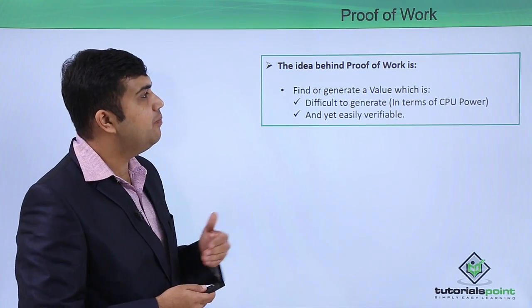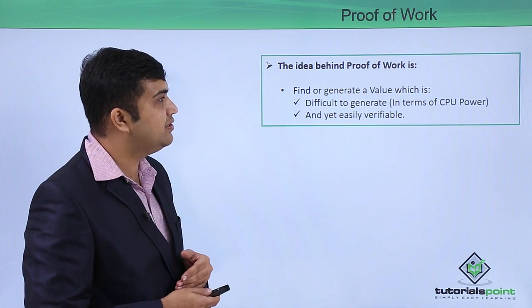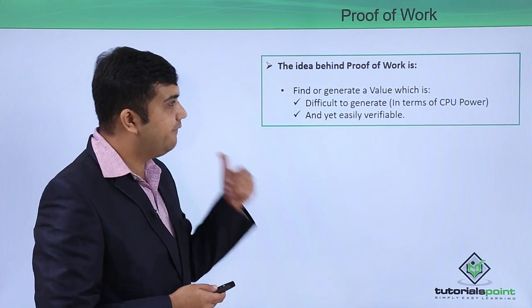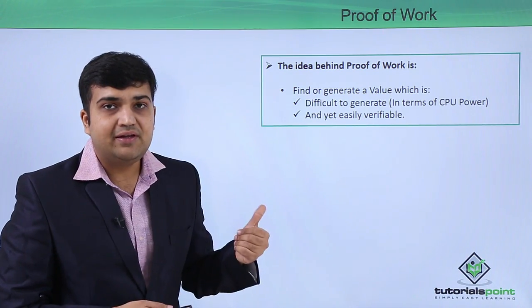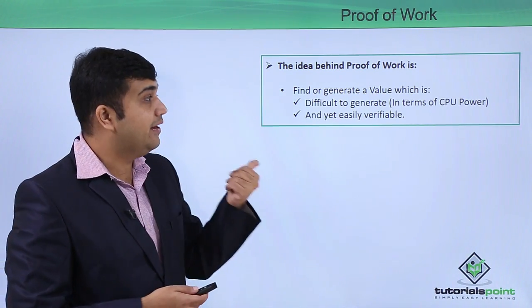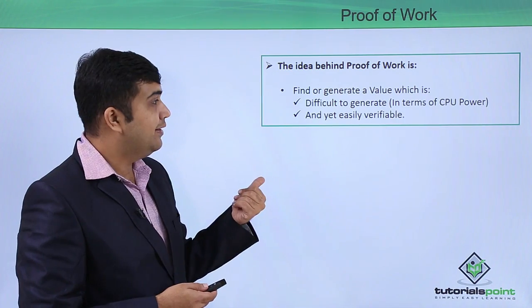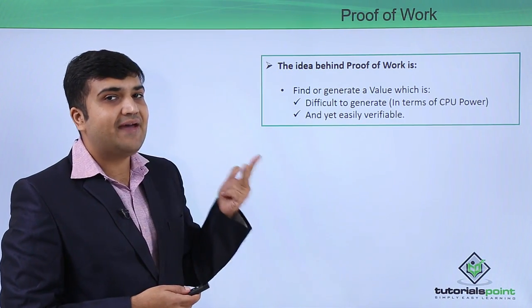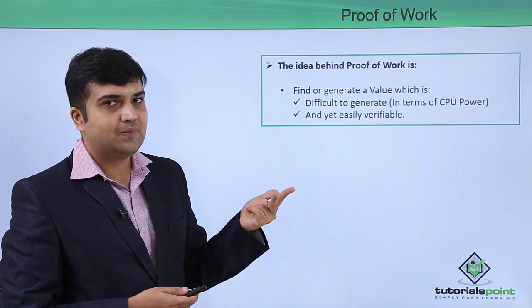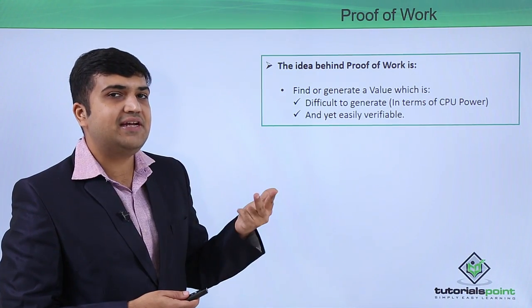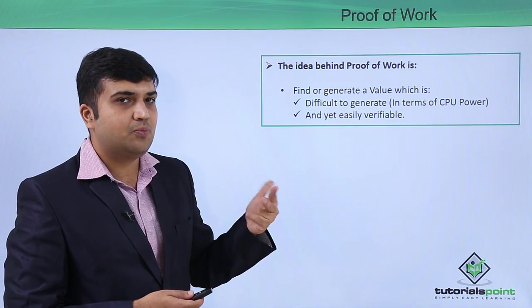The idea of proof of work in the context of blockchain is to find or generate a value which is number one, very difficult to generate in terms of CPU power, and number two, it should be very easily verifiable. So let's see how blockchain solves these two problems.